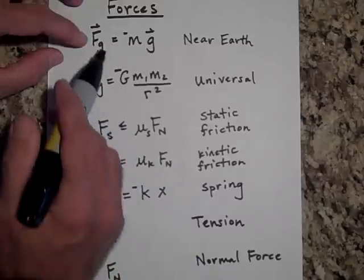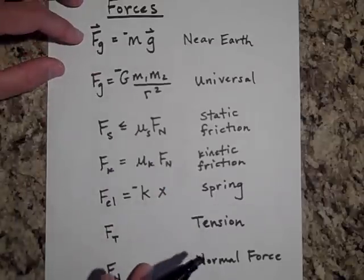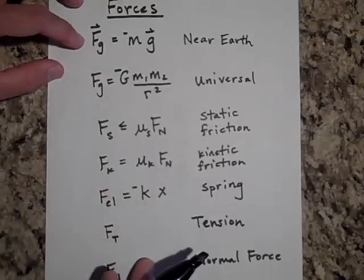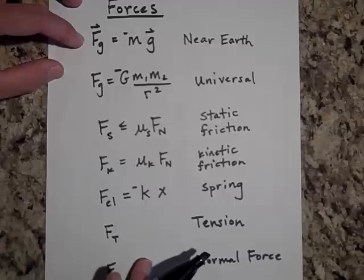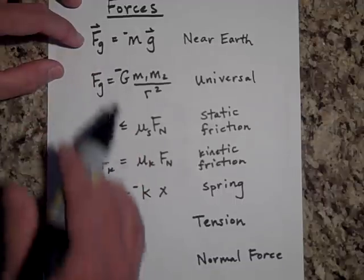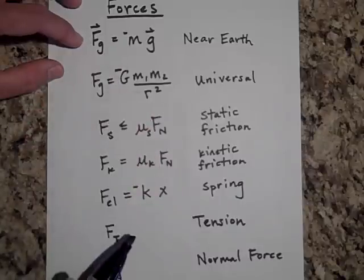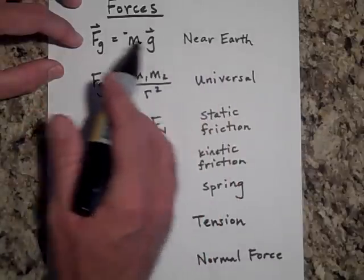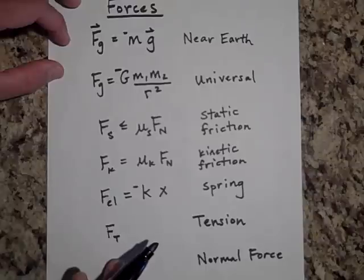We'll be using the gravitational force that you used last year. You probably wrote about it as force of gravity is equal to M times G. We're going to put a little negative sign on there. And this is the force of gravity near Earth. The negative sign just means that it is always downward.